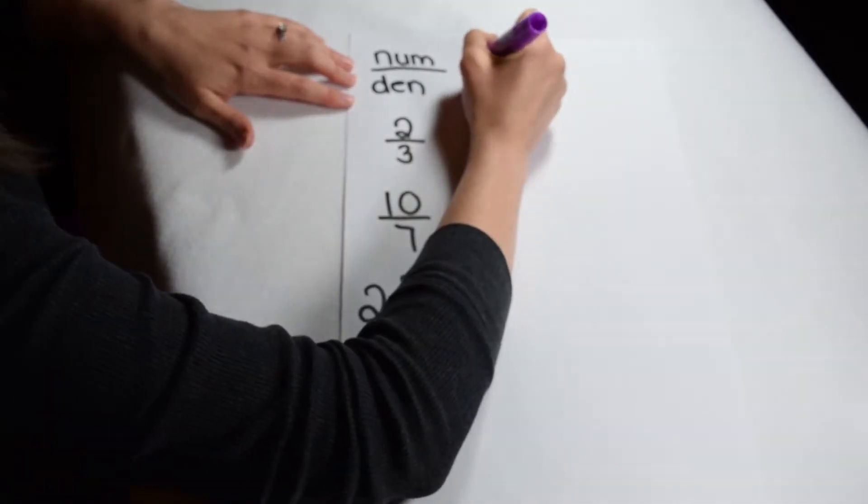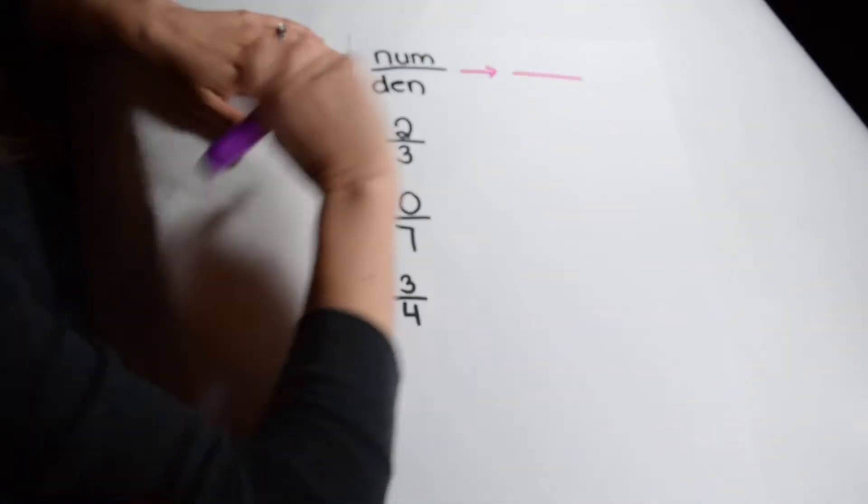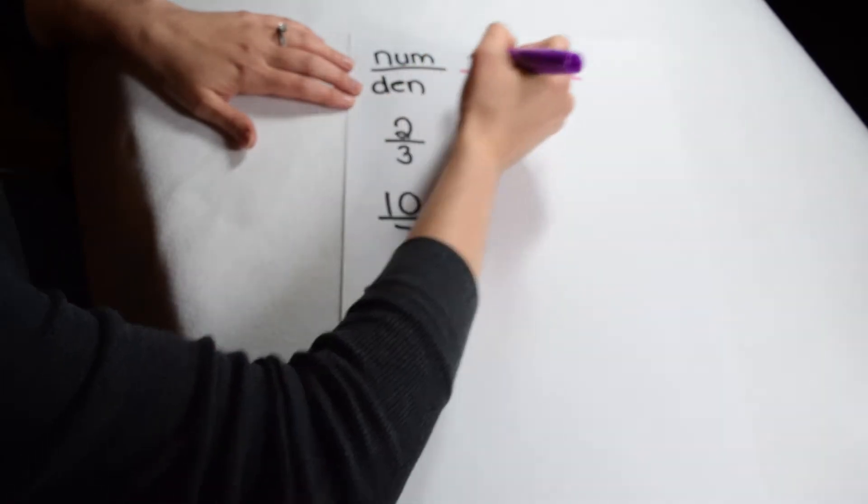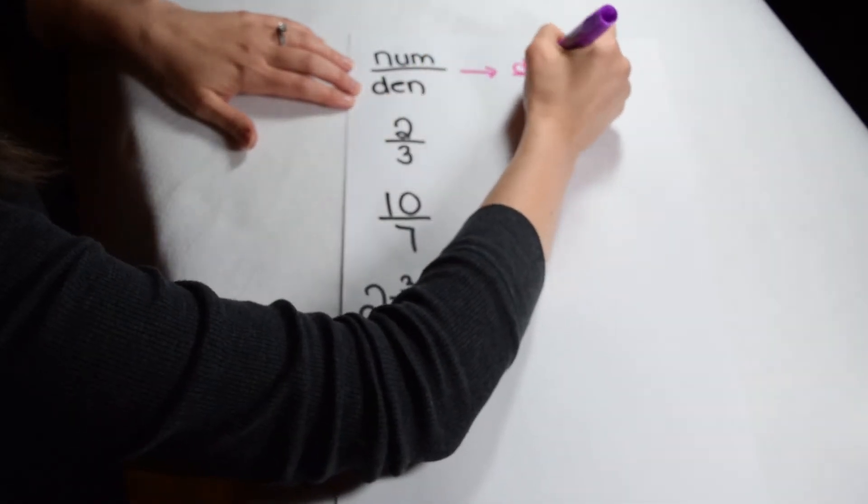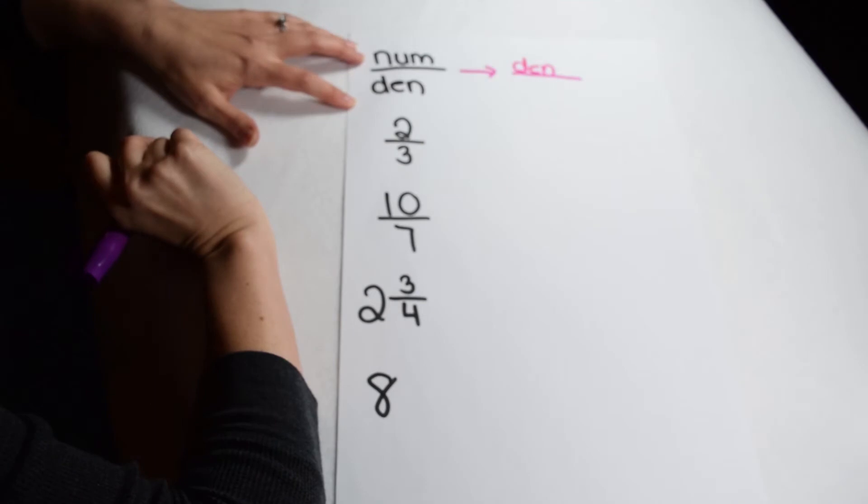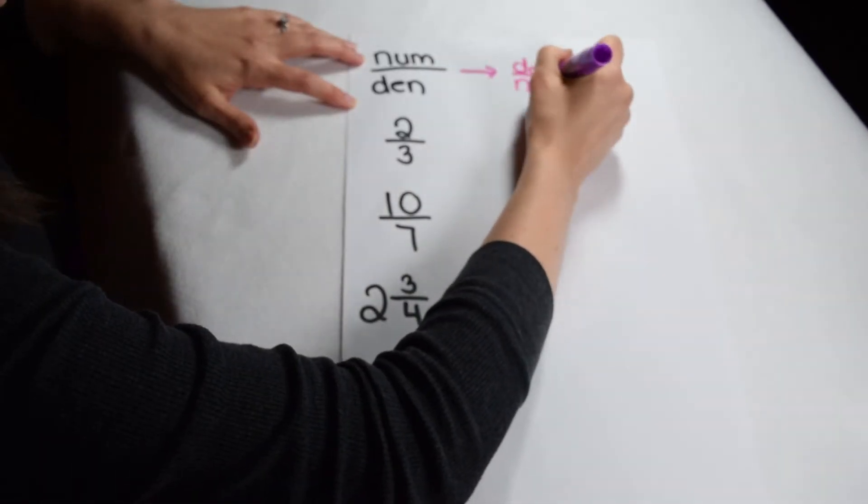In order to take a reciprocal, that means the numerator and denominator trade places. So whatever number is on the top in the denominator spot moves to the top where the numerator goes, and the numerator moves to the bottom.